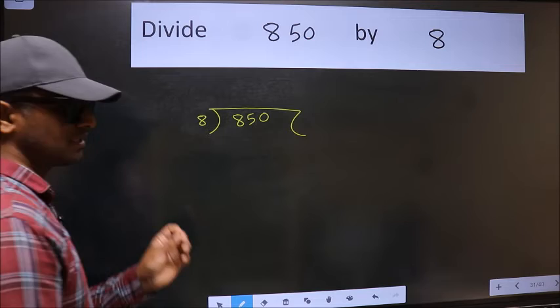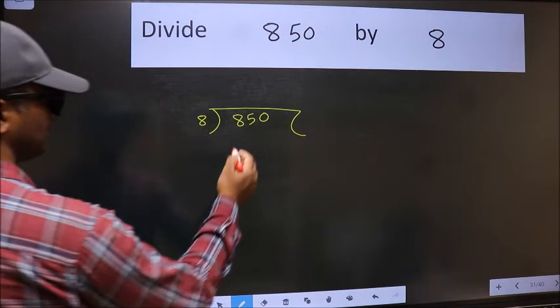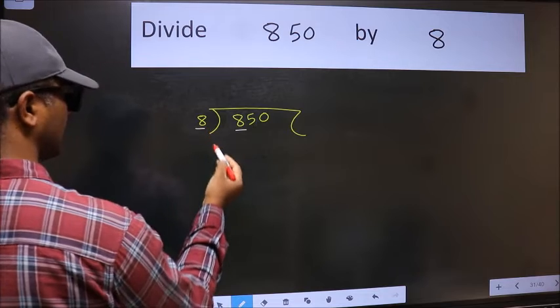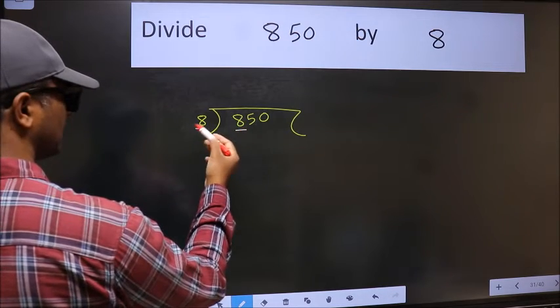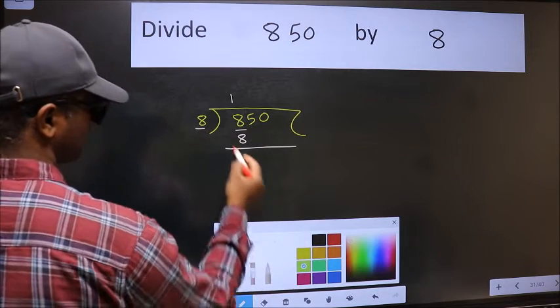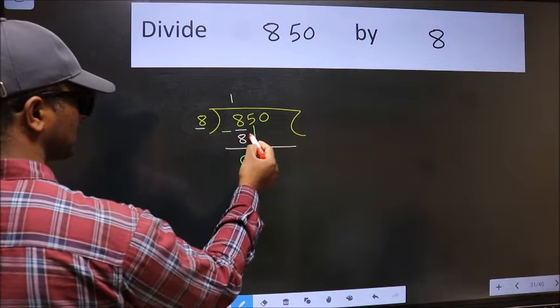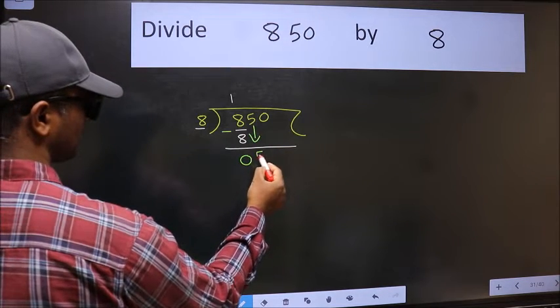This is step 1. Next, here we have 8 and here 8. When do we get 8 in the 8 table? 8 once is 8. Now we should subtract - we get 0. After this, bring down the beside number 5.